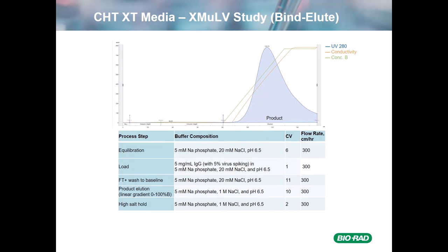Next, we have the CHT-XT media XMULV chromatogram. CHT is a mixed mode — calcium affinity and cation exchange. The conditions are typical for CHT: 5 millimolar sodium phosphate, 20 millimolar salt, pH 6.5. The product was eluted using a 0 to 100% B gradient with 5 millimolar sodium phosphate, 1 molar salt, pH 6.5 over 10 CVs. A high salt hold was done to ensure all product was recovered, and it was also run at 300 centimeters per hour.